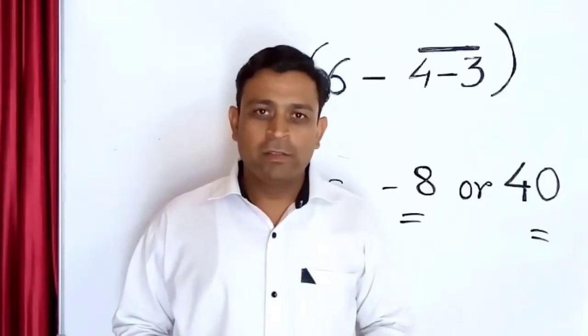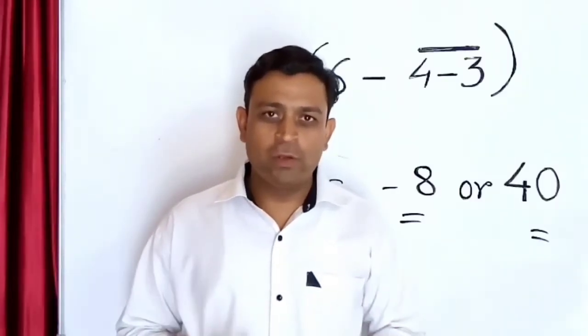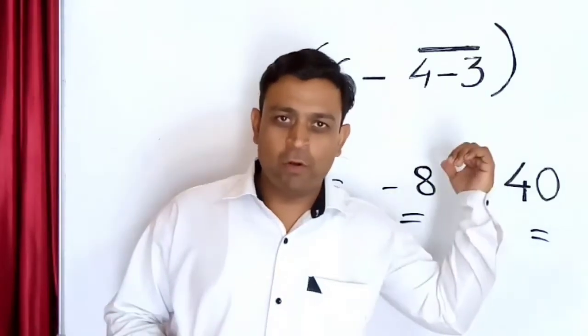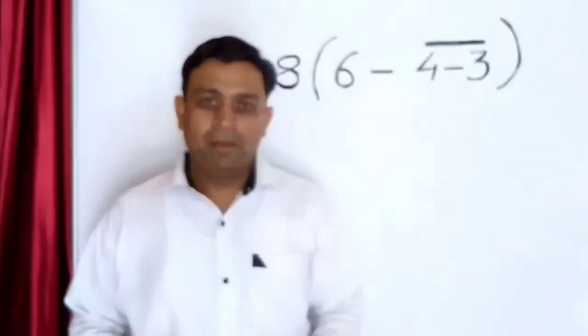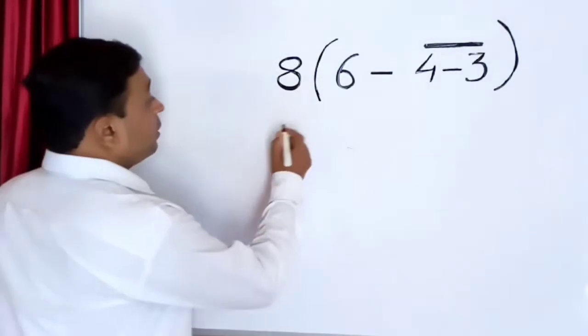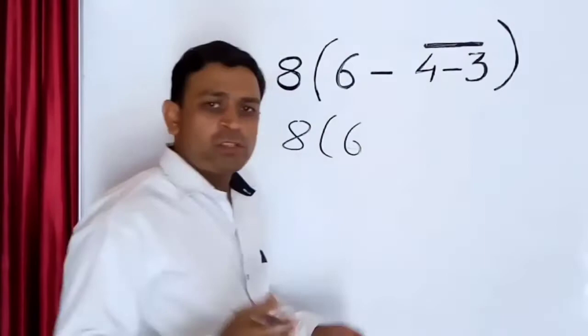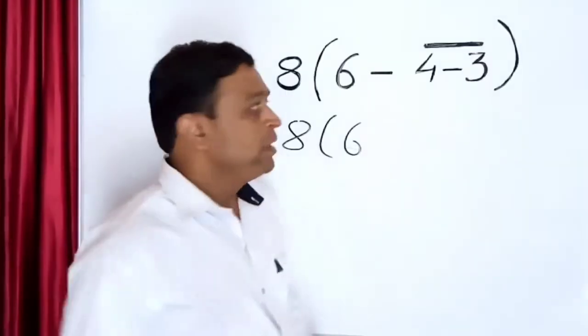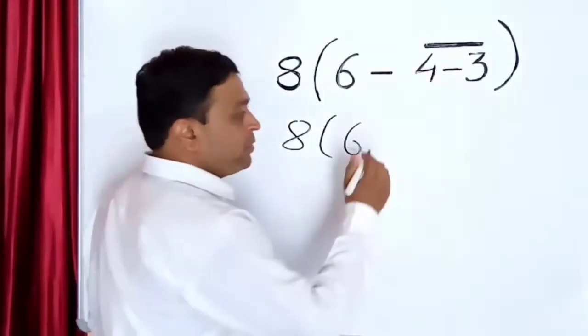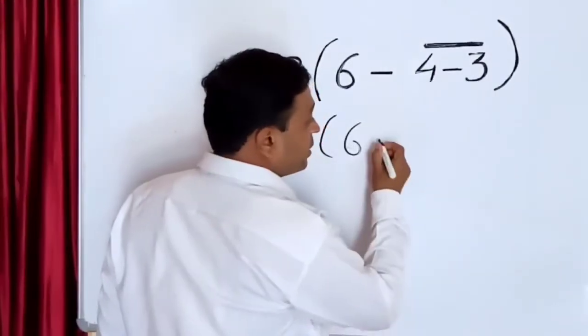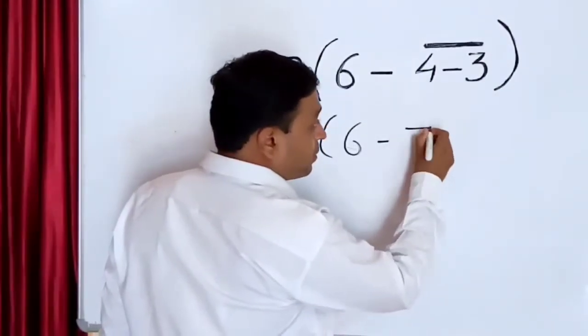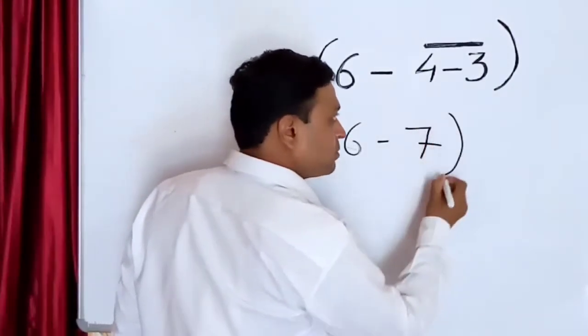The student who does not understand vinculum will solve this problem like this: he will simply solve 8 in bracket 6, because he doesn't understand what is vinculum, he will solve 4 minus 3 as minus 4 minus 3 equals minus 7. Bracket completed.